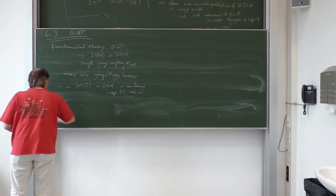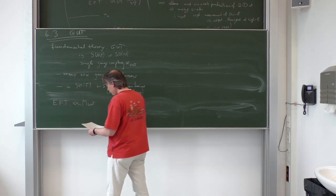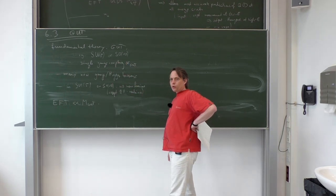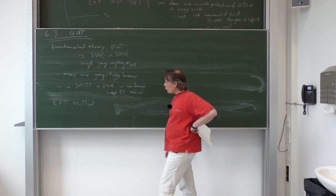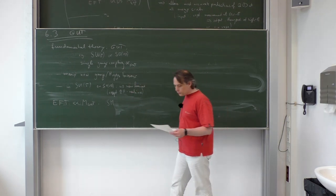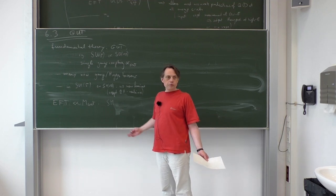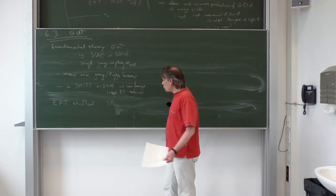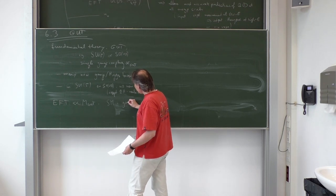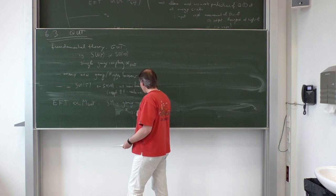Below the GUT scale you need an effective field theory, and in the simplest case that EFT is just the Standard Model. In the Standard Model there are three gauge couplings: alpha_1, alpha_2, and alpha_3. It is useful to use a GUT normalization for the gauge couplings such that the trace over all fermions of the generators T^A T^B always has the same prefactor times the Kronecker delta delta^(AB).